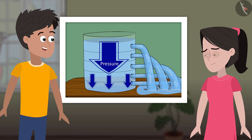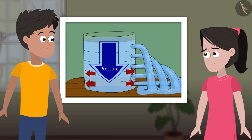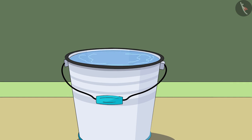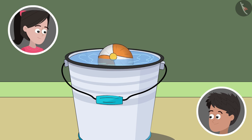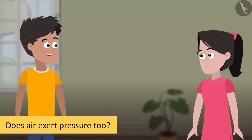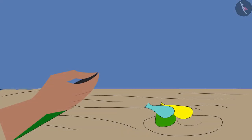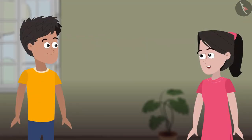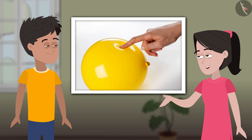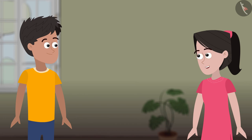Water exerts pressure on the base and the walls of the vessel. I was once trying to push a ball down in a bucket full of water, but I felt an upward push — this means that water exerts an upward pressure also. Sanya, do you think air also exerts pressure? Why is it that after blowing a balloon, we have to close its mouth? When we blow a balloon, the air in it changes the shape of the balloon. Some objects change shape when force is applied to them — this is what happens when we exert force on a balloon or a ball made of rubber.